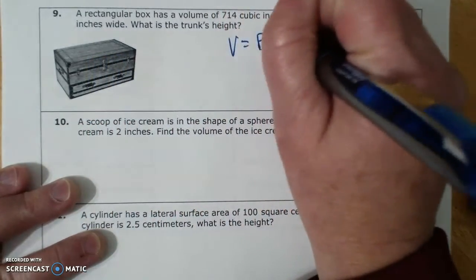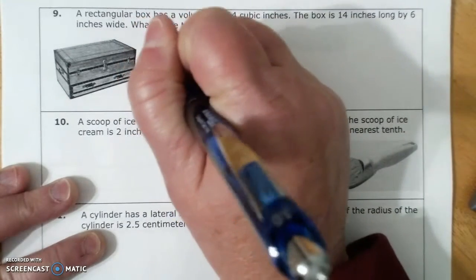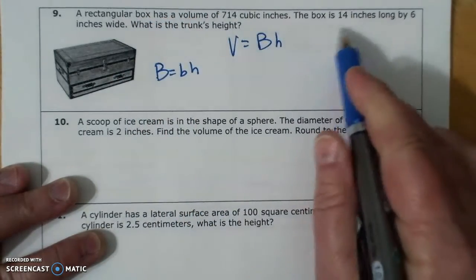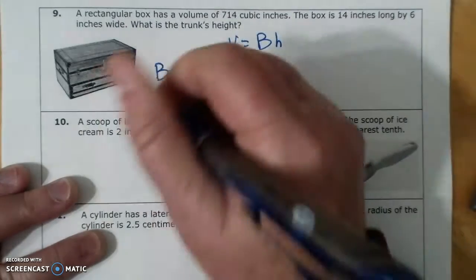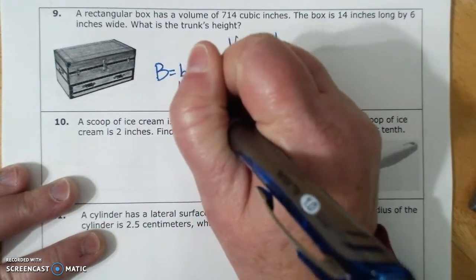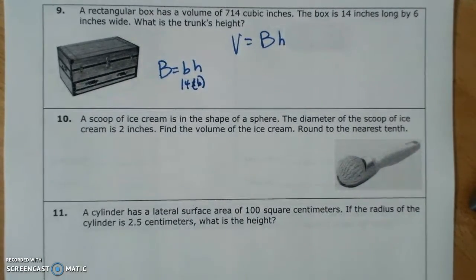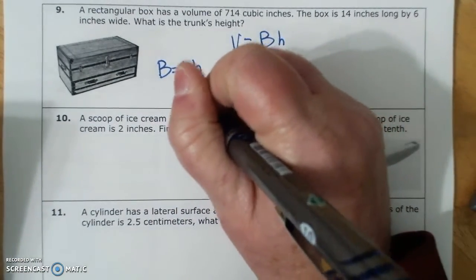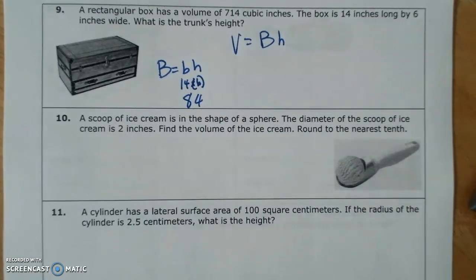Volume equals big B times H. B equals little b times little h. 14 by 6. 14 times 6 is 84.